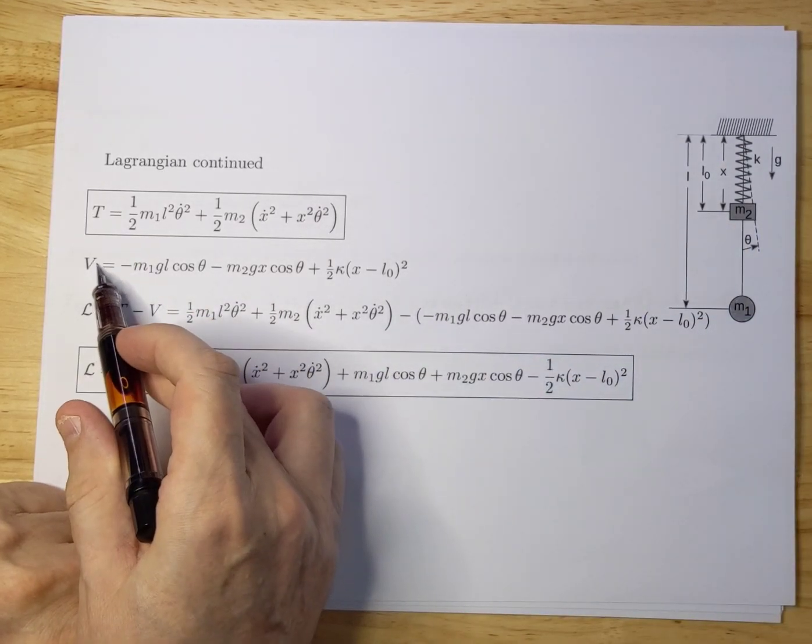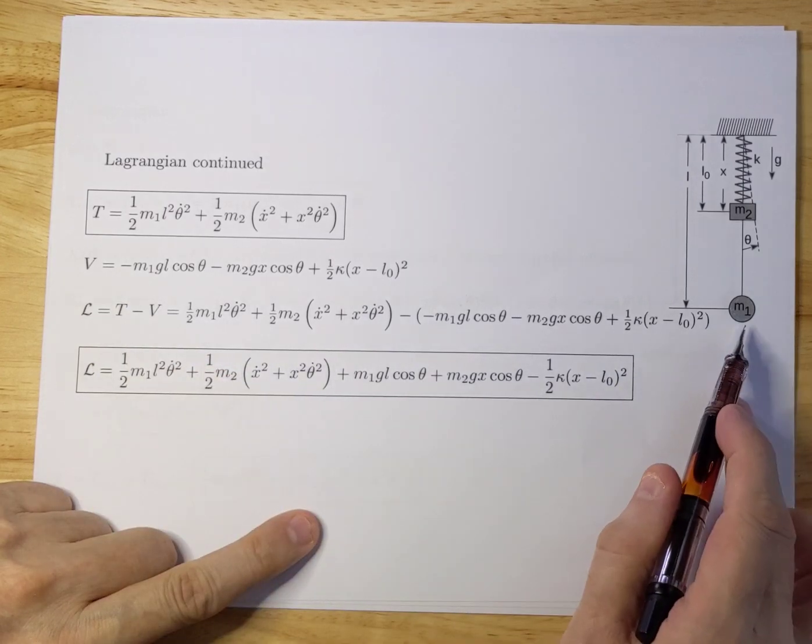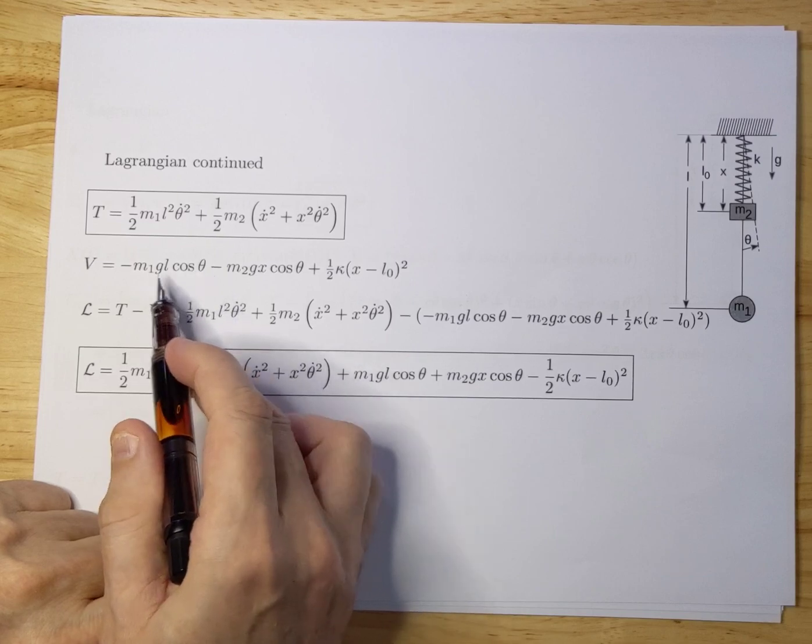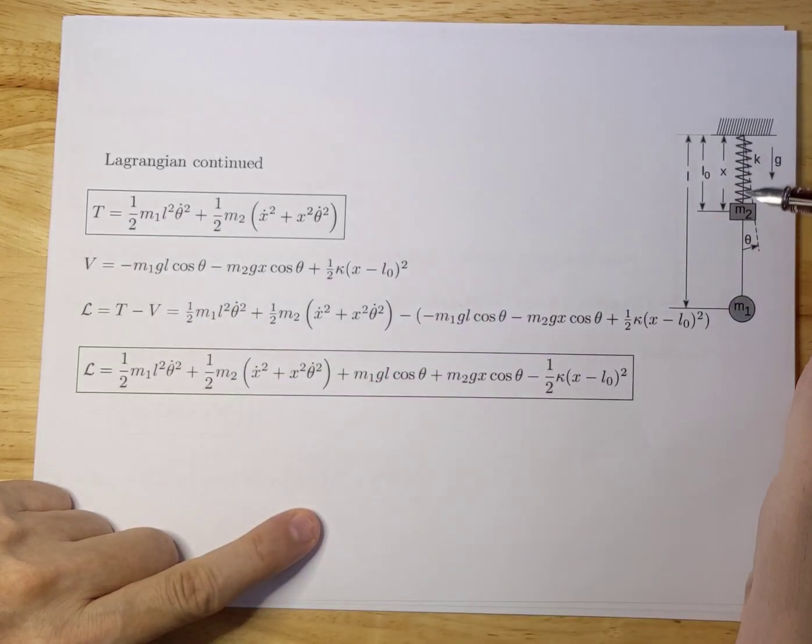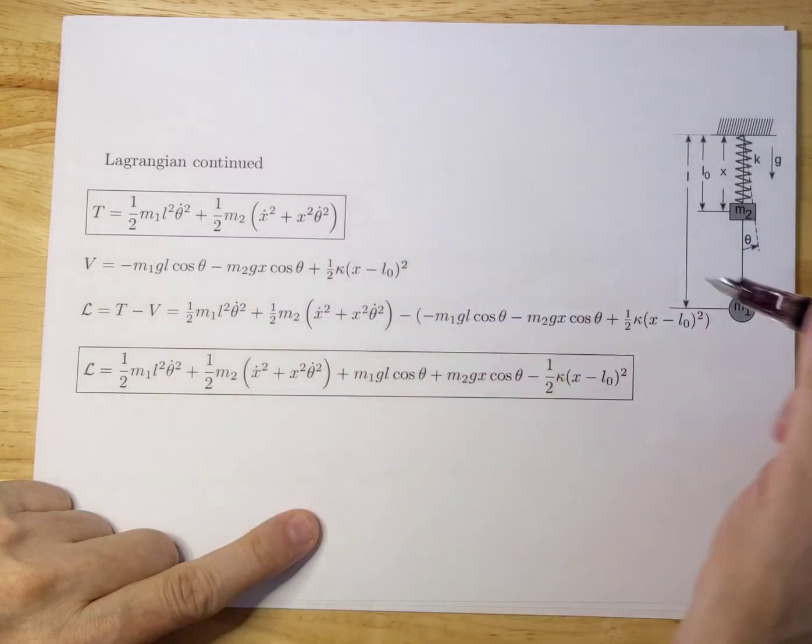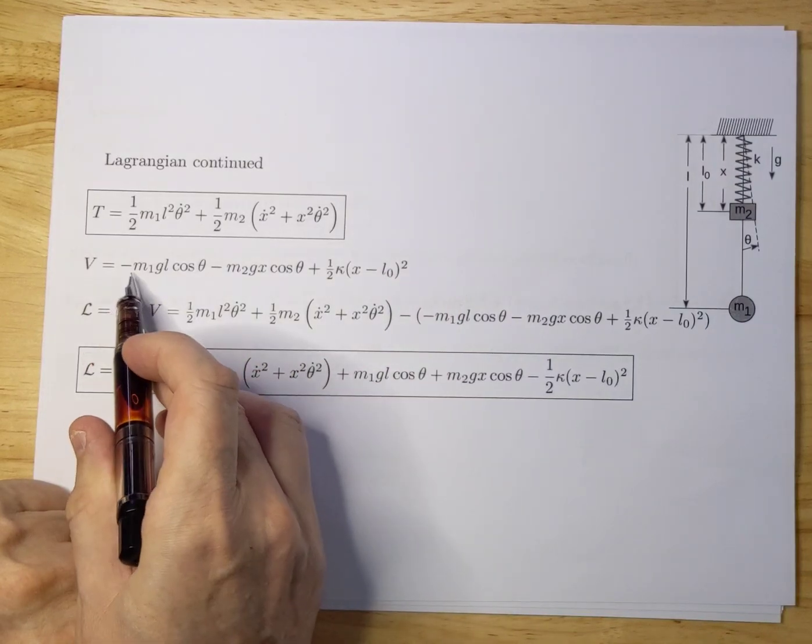Let's take a look at the potential energy terms. Start with M1, that's M1 times g times L times cosine theta. L cosine theta is the length to where the pendulum is at that point in time. This is our zero point, so you need to have a minus here.